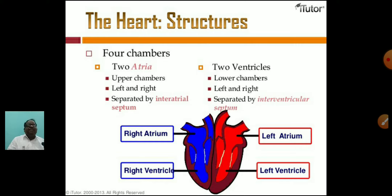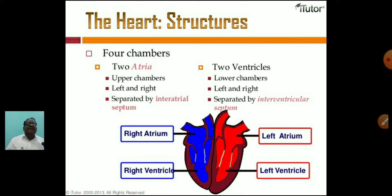The inter-auricular septum divides the right and left atria, and the inter-ventricular septum divides the right and left ventricles. Additionally, the auricle and ventricle on each side are divided by the auriculo-ventricular septum — the left auriculo-ventricular septum on the left, and the right auriculo-ventricular septum on the right.